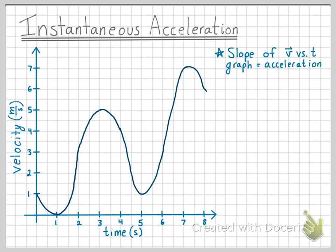With a graph that has a bunch of curved lines, in order to find the slope at any given point, we must draw a tangent line, just like we discussed in the instantaneous velocity video.